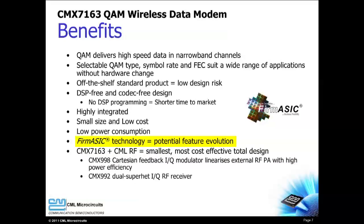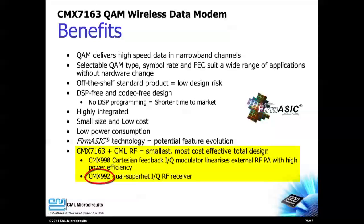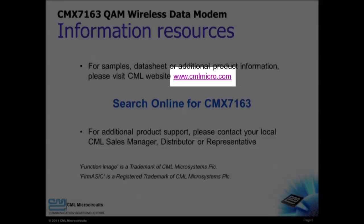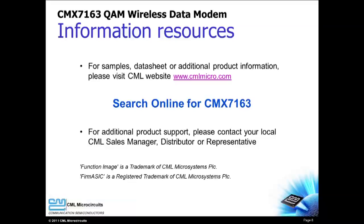Since the CMX7163 is built using CML proprietary firm ASIC technology, future feature enhancements are possible. When the CMX7163 is paired with the CMX998 Cartesian Feedback RF transmitter and the CMX992 Dual Super Heterodyne RF receiver, the core of a cost-effective, high-performance wireless data product is complete. Please visit the CML website to learn more about the CMX7163 or to request samples or an evaluation board. Thank you for watching the introduction video for the CMX7163 QAM Wireless Data Modem.